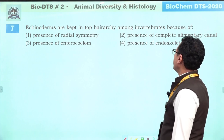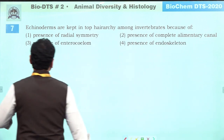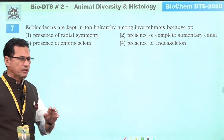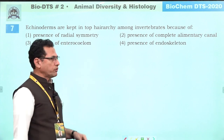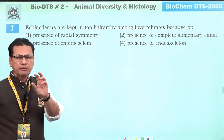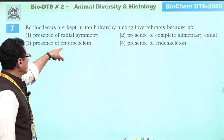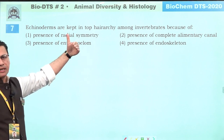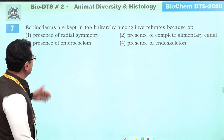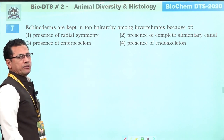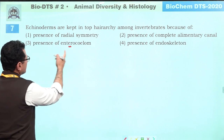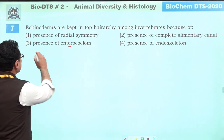Echinoderms are kept at the top hierarchy among invertebrates because of the presence of enterocoelom. Although echinoderms do not have well-developed respiratory, circulatory, or excretory systems, they are kept at the top because of enterocoelom. Having enterocoelom is considered an advanced feature. When classifying animals in taxonomic hierarchy, top priority is given to how the coelom develops. Echinoderms, hemichordates, and all chordates have enterocoelic type coelom — that is why this phylum is kept at the top.